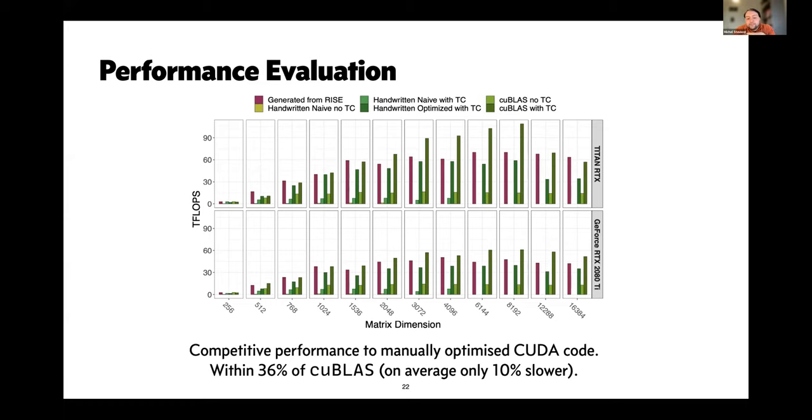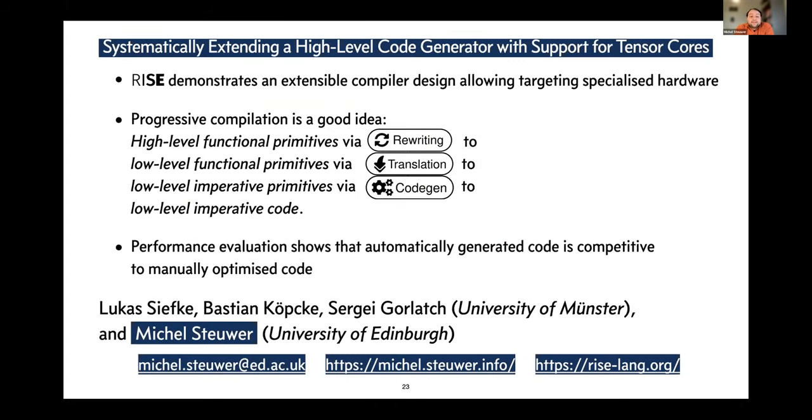That's all I wanted to talk to you about. I think the take-home message is that we hopefully have demonstrated that our RISE compiler is an extensible design that allows us to target specialized hardware. I think these progressive compilations—going from something high-level functional to something low-level functional, then to something low-level imperative, and then to the actual code you want to generate—that this progressive compilation turns out to be a good idea that actually allows us to extend this in a fairly straightforward way. Thank you very much. I'm happy to answer a couple of questions.